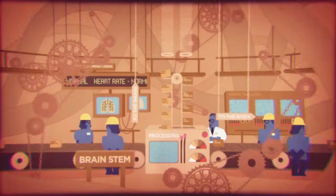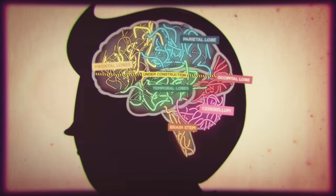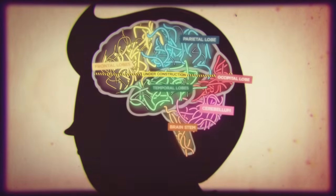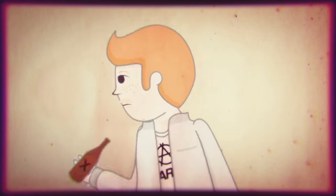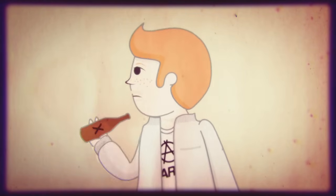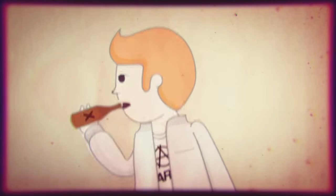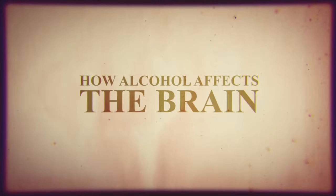Alcohol affects the teenage brain differently to the adult brain because it's still developing and not all areas are fully operational. How you feel when you drink alcohol can be an indication of the damage it's doing to different areas in your brain.